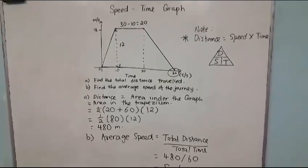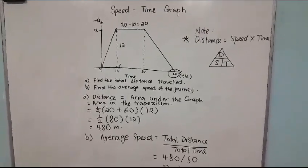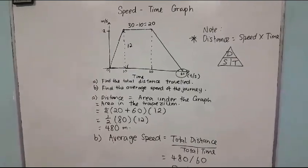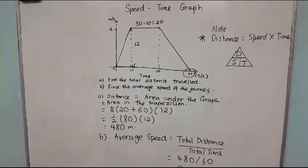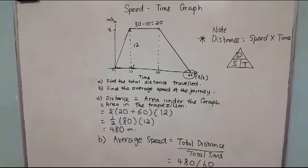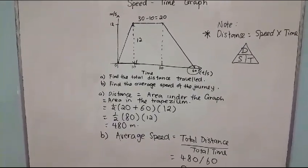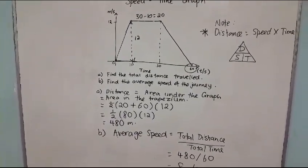To solve this question, it is good to know the formula: distance is speed times time, and related to the graph, it is the area under the graph. So it is the area of the trapezium.